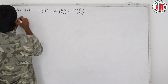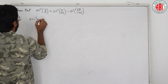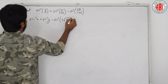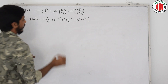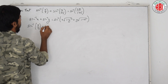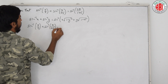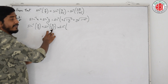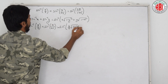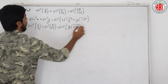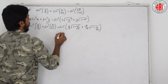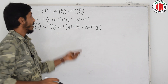First, let us do it by substituting in the formula. The formula is: sin inverse x plus sin inverse y is equal to sin inverse of x into root of 1 minus y squared, plus y into root of 1 minus x squared. Now substituting: x is 4 by 5 and y is 7 by 25. We write sin inverse 4 by 5 plus sin inverse 7 by 25. Now under root: 1 minus y squared is 1 minus 49 by 625, giving us root of 625 minus 49 by 625.